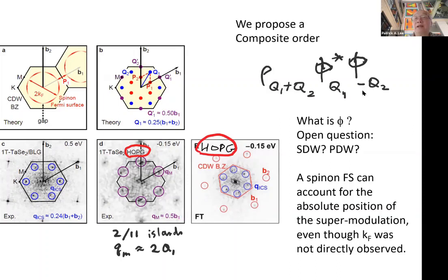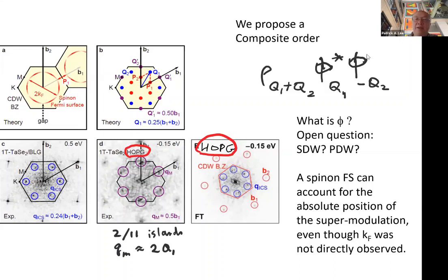The idea is that they are seeing a composite order parameter. In Landau theory you can multiply two order parameters together. Because the wavevectors form a triple-Q structure between three equivalent directions, Landau theory allows coupling to a charge order parameter with the sum of two of them. This obeys all symmetry requirements. The primary order may be a spin density wave invisible to STM, but a spin-polarized STM tip might reveal it, providing indirect evidence for a spinon Fermi wavevector kF.